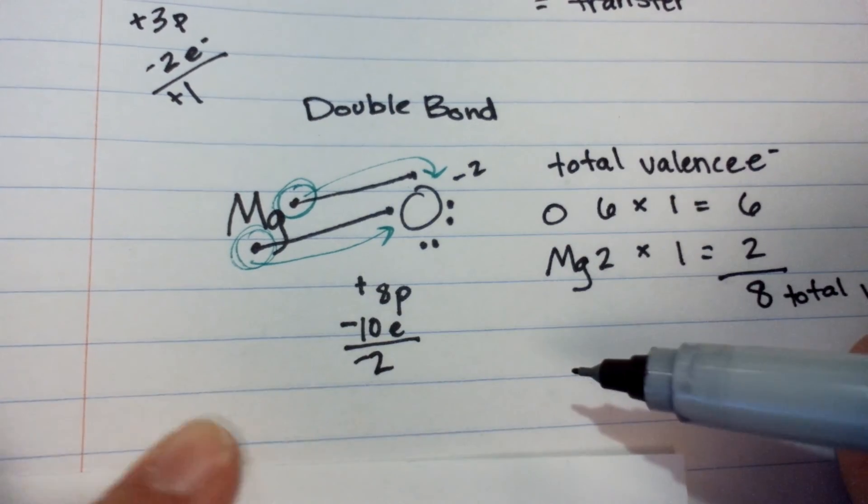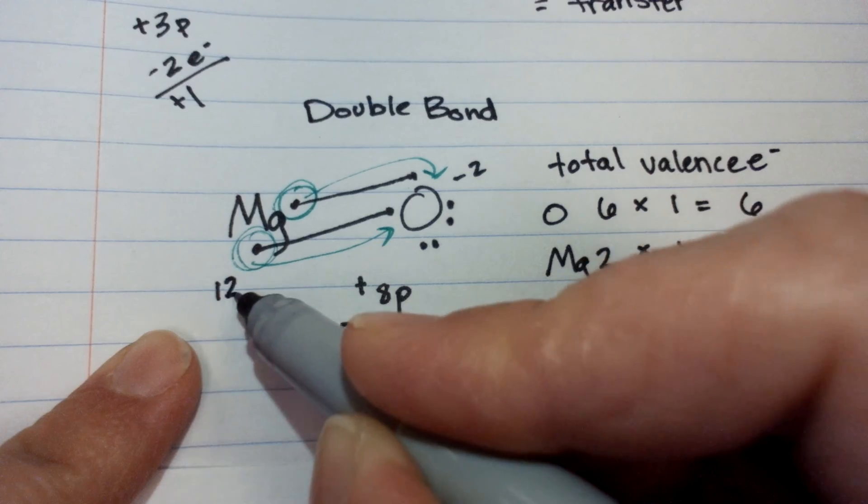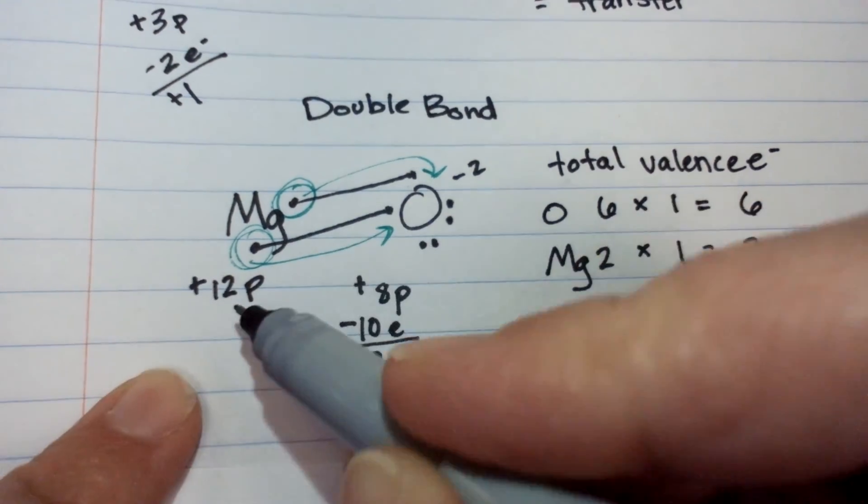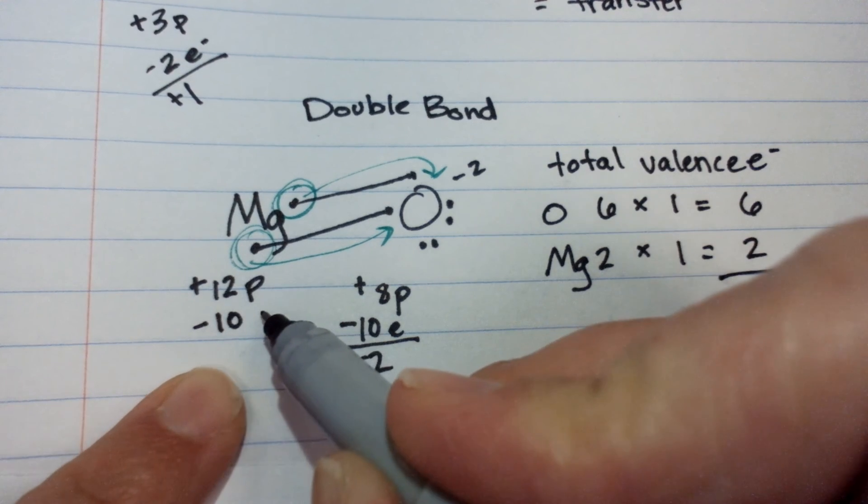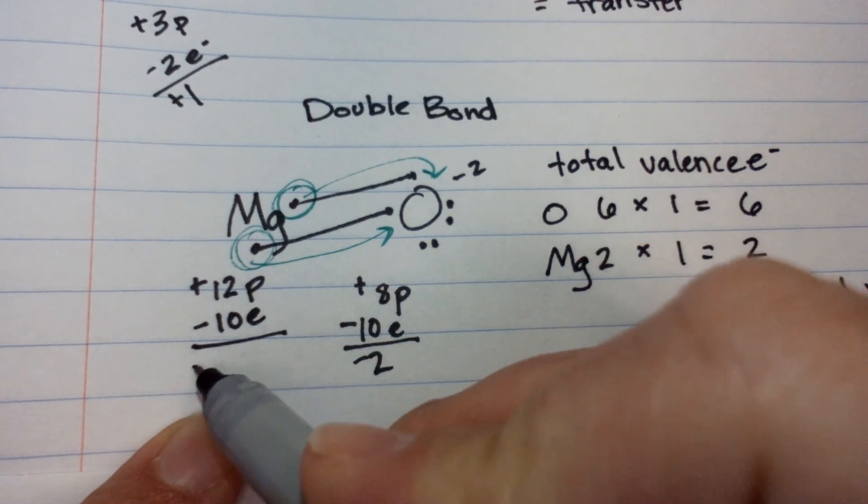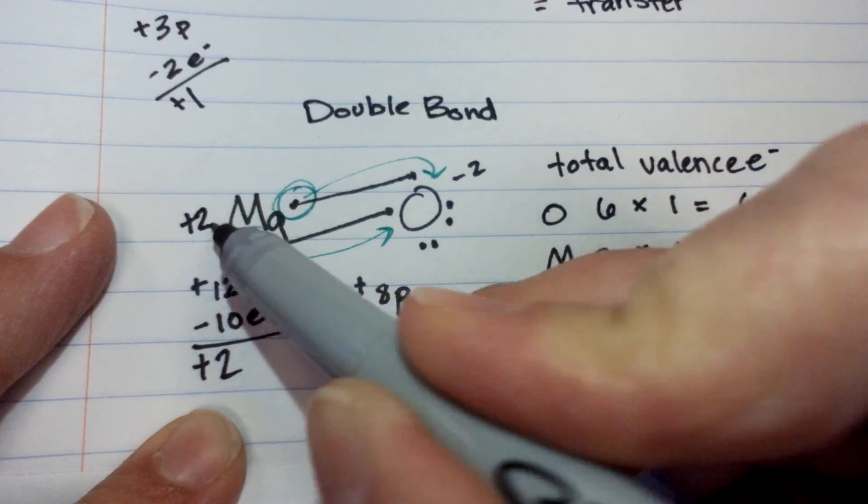What's the charge on magnesium? Magnesium has 12 protons. We took away 2 of its electrons, so it only has 10 electrons. Positive 2. So, magnesium is going to have a positive 2 charge.